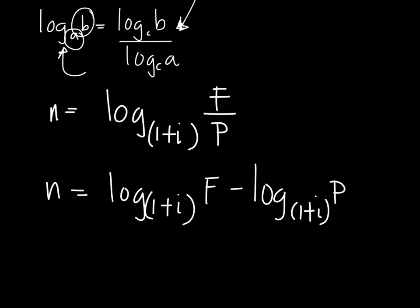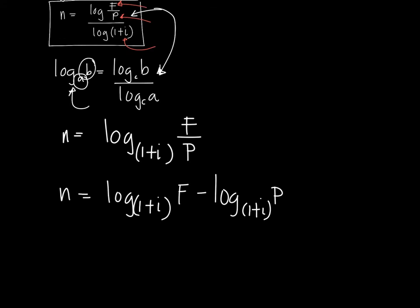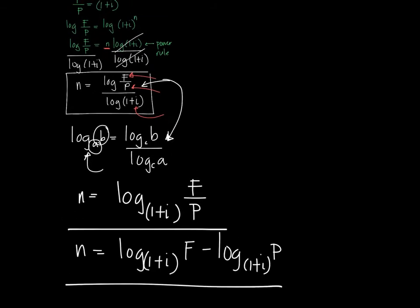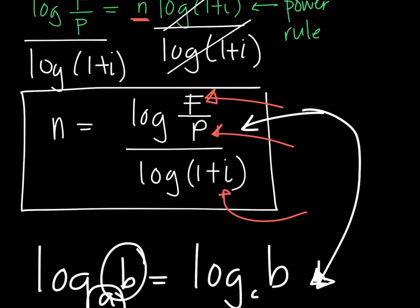So, there are many things that you can do with the formula depending on the need. If you want to make it as a single log, if you want to expand it using some properties like in this case the quotient law, then the N could take so many different forms. But the base formula is N is log of the quotient of F and P over the log of 1 plus I.